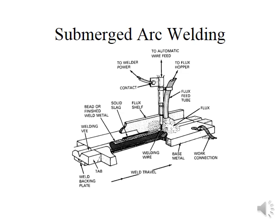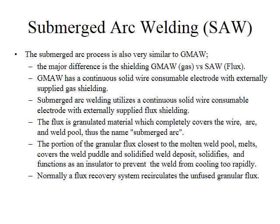That portion of flux closest to the molten weld pool melts, covers the weld puddle and solidified weld deposit, then solidifies and functions as an insulator to prevent the weld from cooling too rapidly. Normally a flux recovery system recirculates the unfused granular flux. There is no visible arc, so the welder doesn't need to wear dark welding lenses. Submerged arc welds are typically very clean with very good mechanical properties, and generally have very few problems going through x-ray or ultrasound.